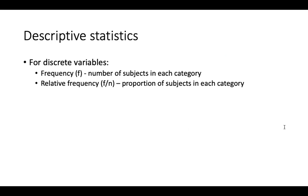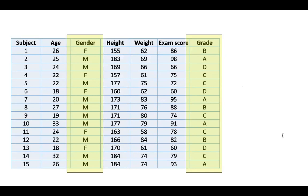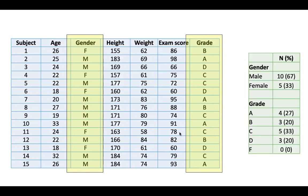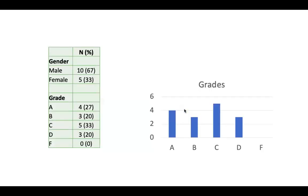For these variables, we use descriptive statistics to help us summarize and understand them. For discrete variables, we typically use frequency, where we count the number of subjects in each category, and relative frequency, where we calculate the proportion of subjects in each category. For our dummy data set, looking at the two discrete variables — gender and grade — we can summarize these with frequencies and percentages. This gives you a general sense of the distribution, which can be very helpful. You can even chart these to further understand the distribution.